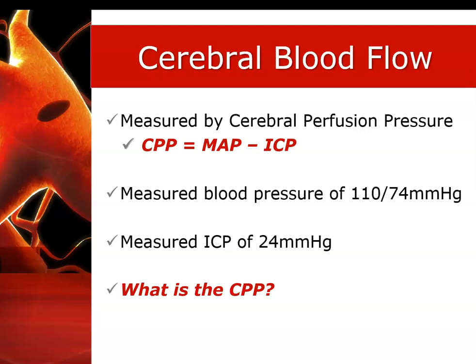Let's practice calculating one. The patient has a blood pressure of 110 over 74 millimeters of mercury. First, calculate your mean — pause the video for just a minute to get that number. The MAP for this patient is 86 millimeters of mercury. The provided ICP measurement via a monitor is 24 millimeters of mercury. What then is the cerebral perfusion pressure? Pause the video and hand-calculate it before you proceed. This patient's CPP is 86 minus 24, and you should have gotten the answer of 62 millimeters of mercury. I am not comfortable with this number.